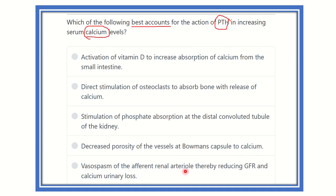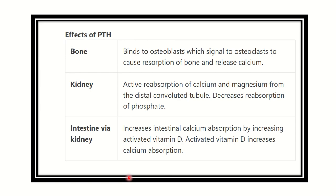Vasospasm of the efferent renal arteriole, thereby reducing glomerular filtration of calcium and reducing urinary calcium loss. Now let's look at the details about parathyroid hormone and its effects.